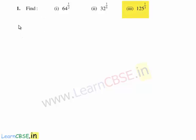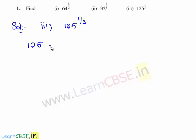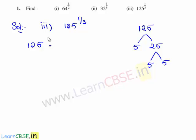Now let us move on to the third bit. The third bit is: find 125 raised to the power of 1 by 3. First, let us write 125 in its irreducible factors by finding its prime factors. 125 can be written as 5 times 25, and 25 is written as 5 times 5. Therefore, the irreducible factors of 125 are 5 times 5 times 5, which is 5 raised to the power of 3.